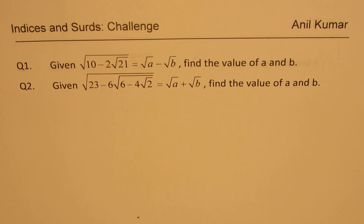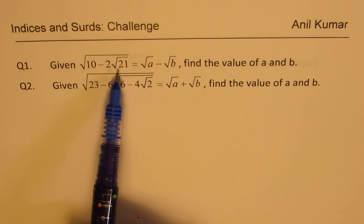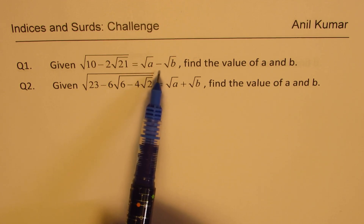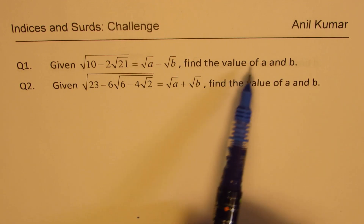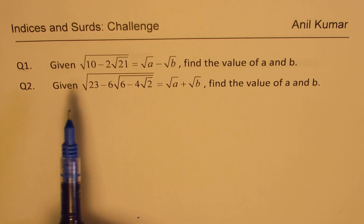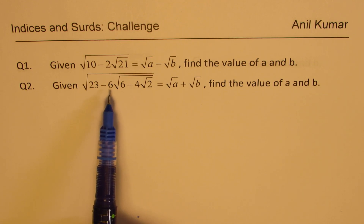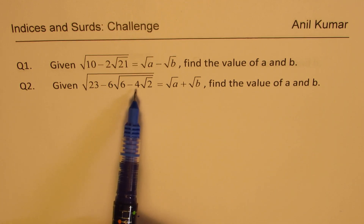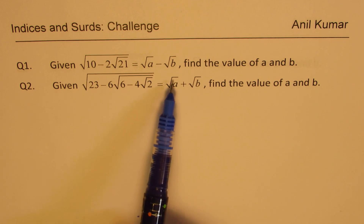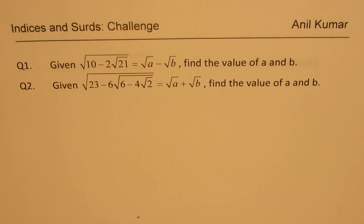The questions are: given square root of 10 minus 2 square root of 21 is equal to square root of A minus square root of B, find the value of A and B. And question number two: given square root of 23 minus 6 square root of 6 minus 4 square root of 2 equals square root of A plus square root of B, find the value of A and B.